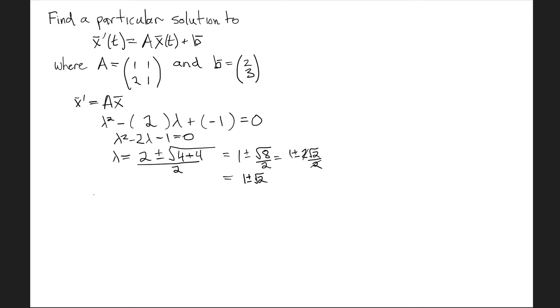So whatever the eigenvectors are, the solutions to the homogeneous equation will look like e^((1±√2)t) times some eigenvector. This is certainly not a constant function. If we had found a zero eigenvalue, then we would have a potential conflict between our non-homogeneous term and the homogeneous solution.